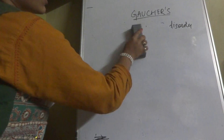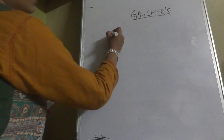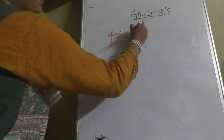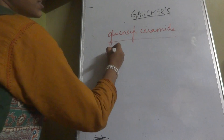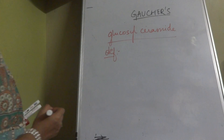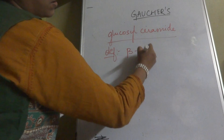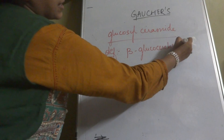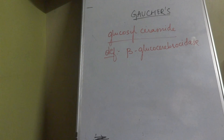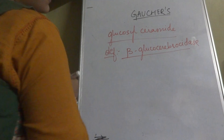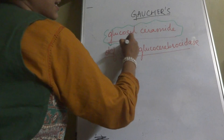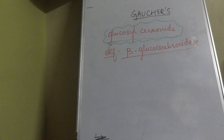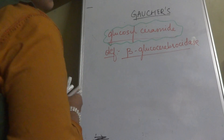A lipid called glucosylceramide would usually break down, but what prevents its breakdown is the deficiency of an enzyme called beta-glucocerebrosidase. If beta-glucocerebrosidase is not present, this leads to the accumulation of lipids — glucosylceramide or GM3 ganglioside — in the cell.